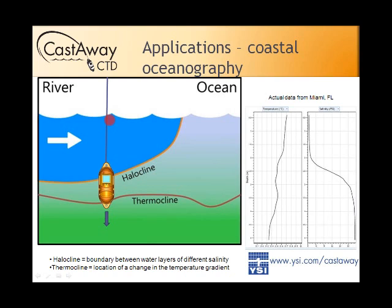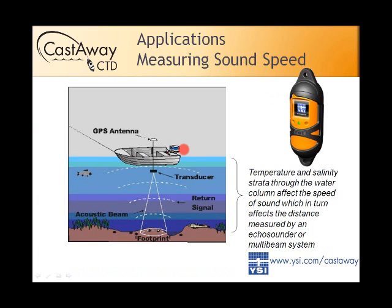In one example from Miami, you can see the quick change in salinity that was picked up in a shallow-water cast. We're measuring the same basic parameters — conductivity and temperature. There's a commonly accepted formula, the Chen-Millero formula, which takes conductivity and temperature and computes a sound speed profile so that corrections can be applied to measurements made by multi-beam or single-beam echo sounders to get a corrected depth.